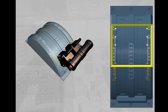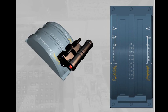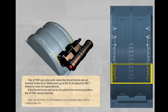The autothrust can only work when the thrust levers are set forward of the idle detent and up to the climb detent, or MCT detent in case of engine failure. If the thrust levers are set by the pilot in the reverse position, the autothrust cannot operate. Note: the alpha-floor function is an exception, which will be covered later on.